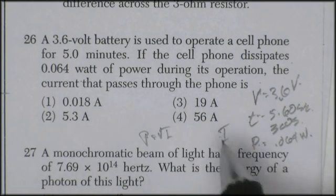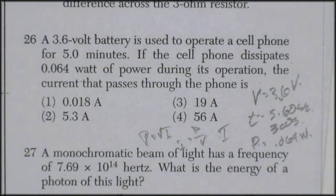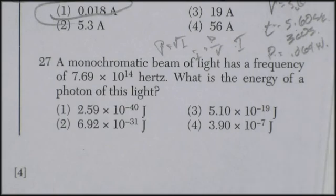So 0.064 divided by 3.6. So 0.0 something. I've got 0.0177. Well, let's go 0.0127.